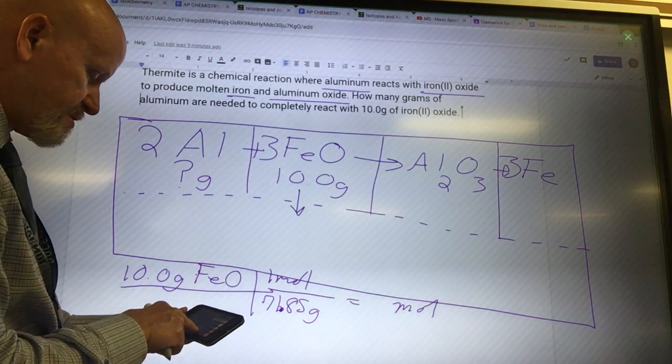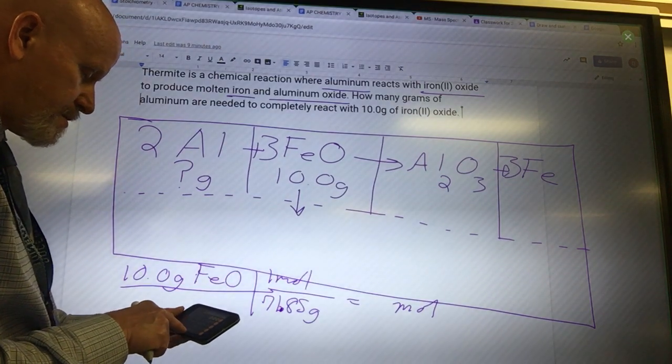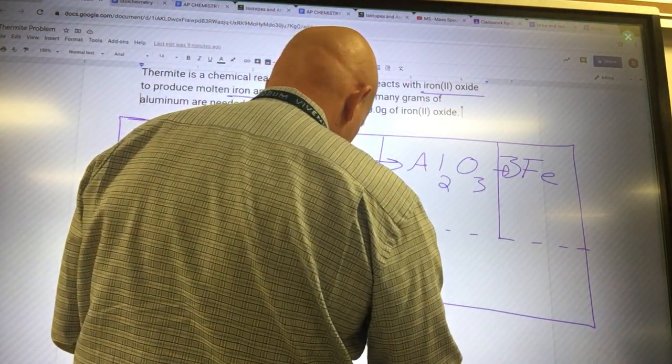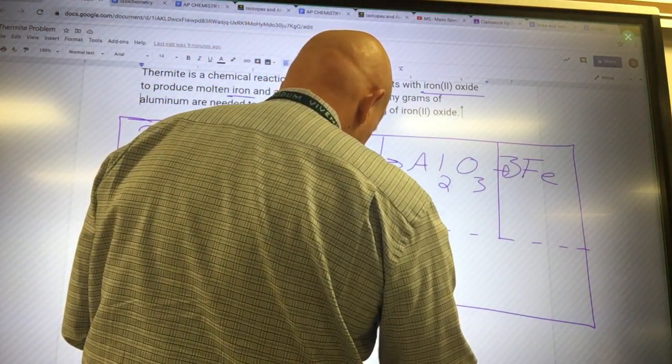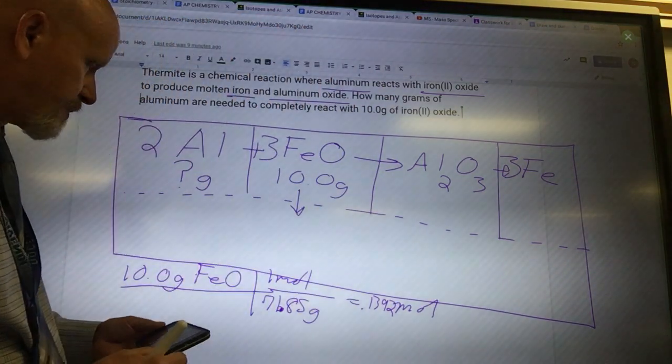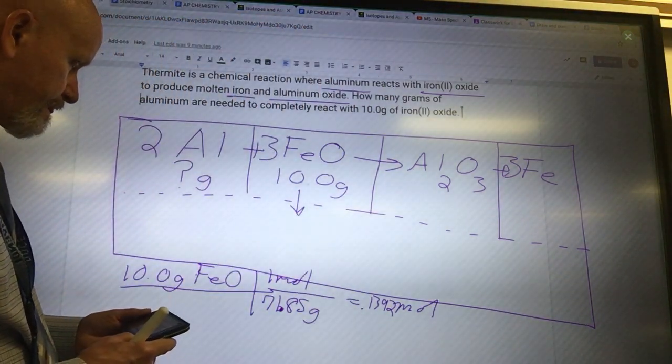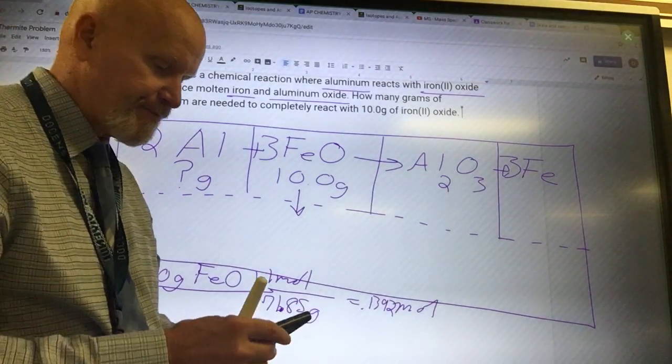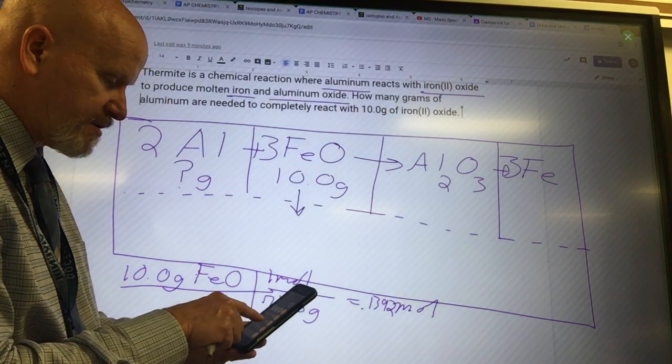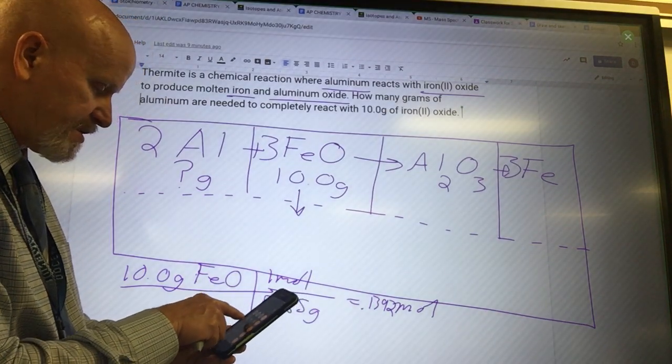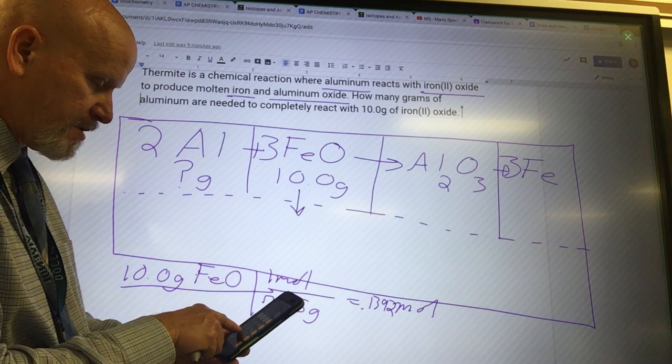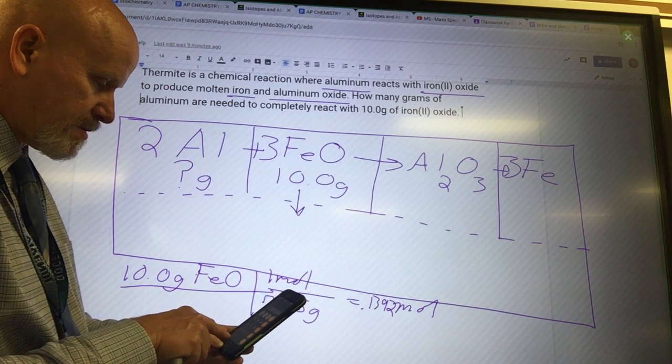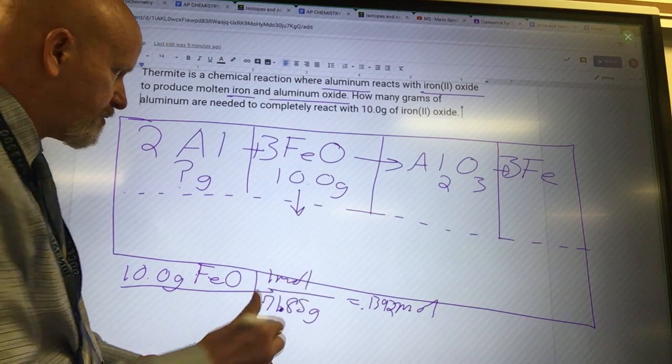If I take 10 grams, I get 0.1392 moles. Is that about right? I'm hoping that that's right. I'm going to double check that. 10 divided by 71. Yep, so 0.139.